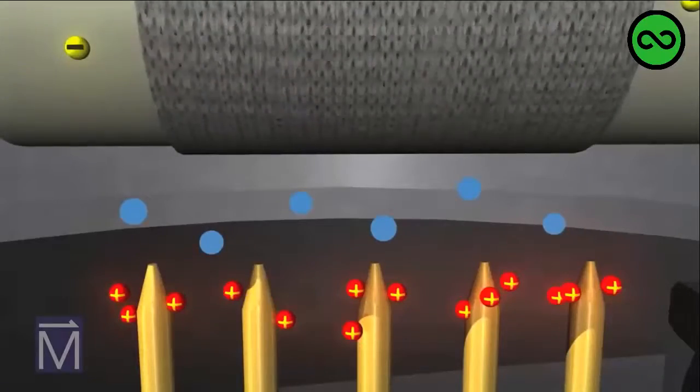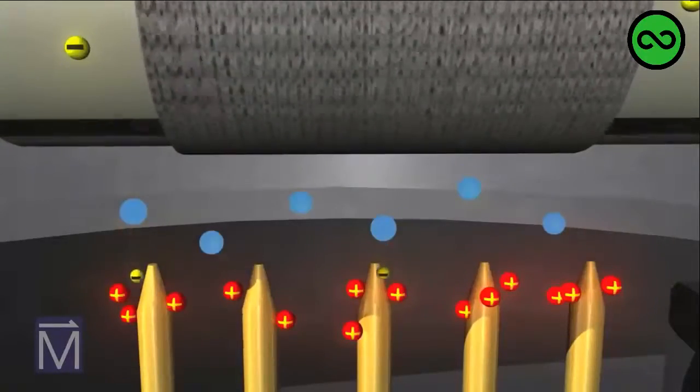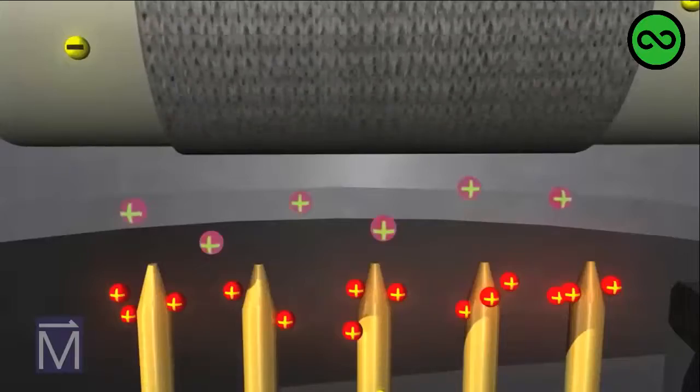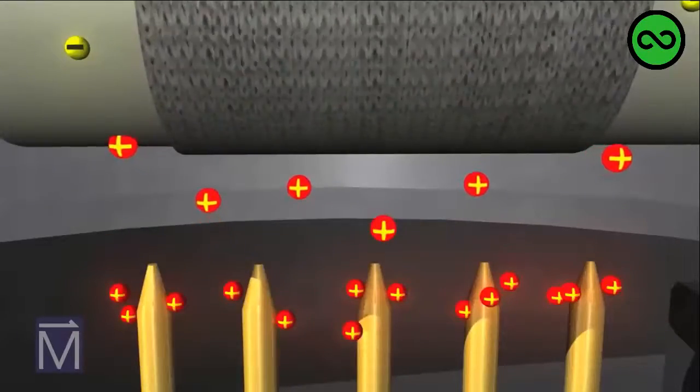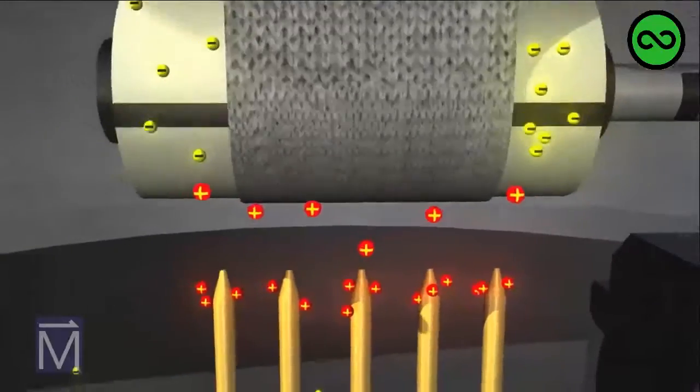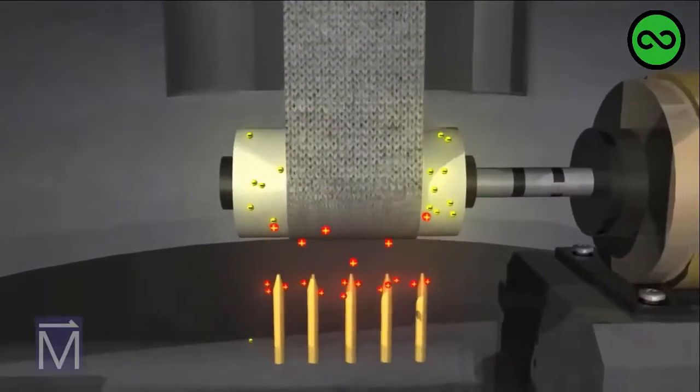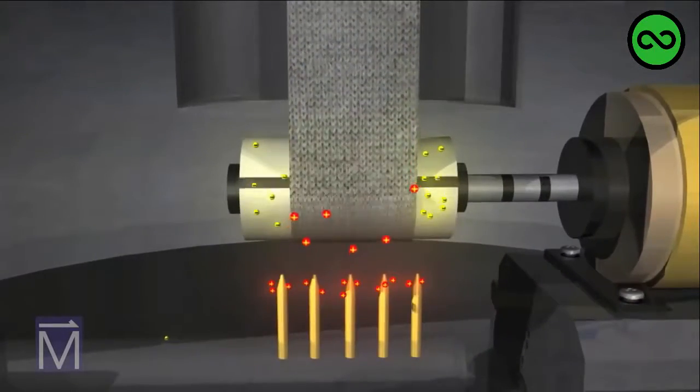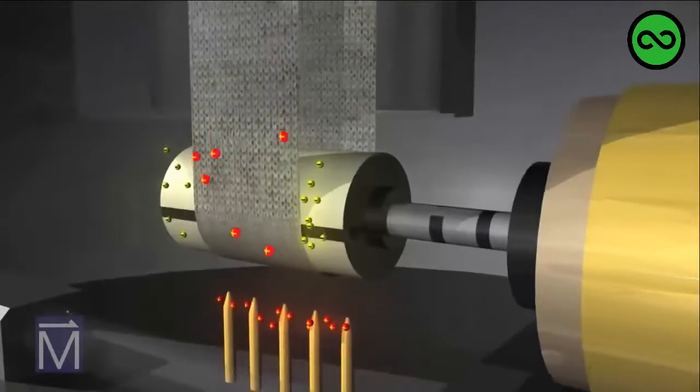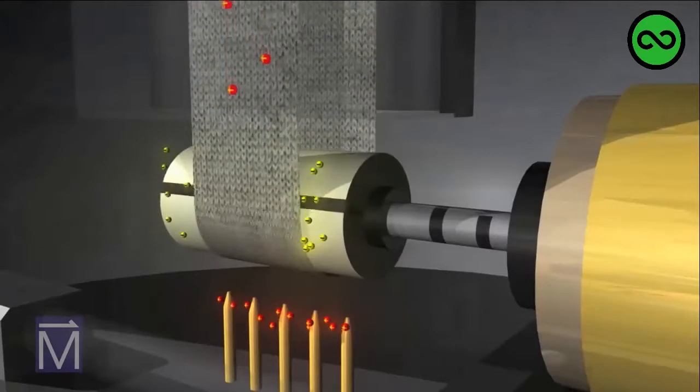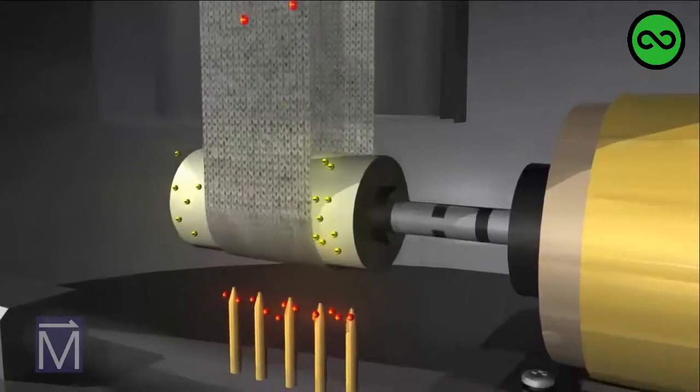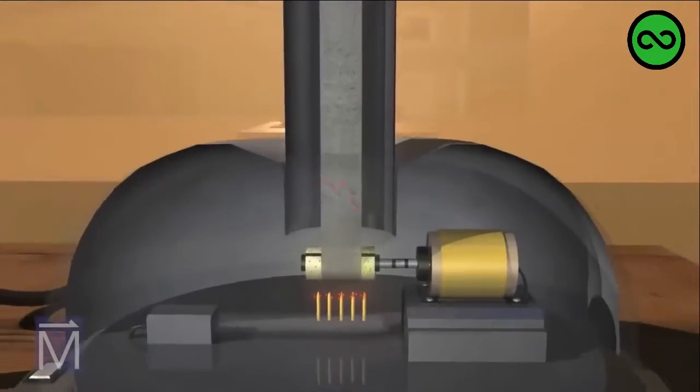As a result, electrons in the nearby air molecules break away from those molecules and go to the positive comb tips. They leave behind positively charged molecules, or ions, which are then attracted to the negatively charged roller. The positive air ions can't reach the roller, however, because the belt is in the way. Instead, they end up coating the outer surface of the belt and are carried up to the top of the machine.